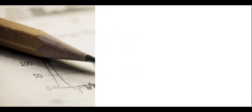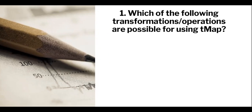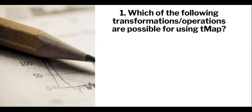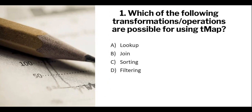Our first question: which of the following transformation operations are possible using tMap? The options are lookup, join, sorting, and filtering. If you can answer within five seconds, you're good with tMap basics. The answer: we can apply lookup, join, and filtering - we cannot apply sorting using tMap, as sorting requires other components. So options A, C, and D are the correct answers.